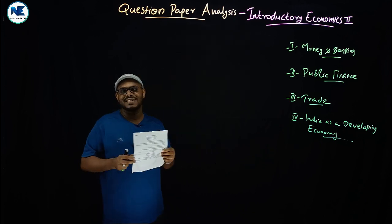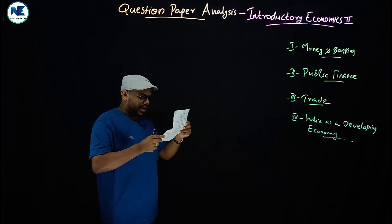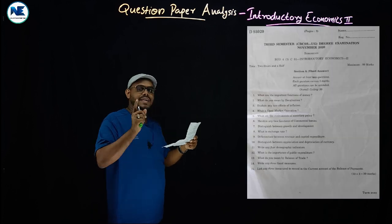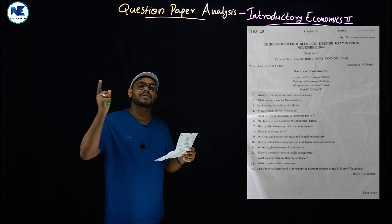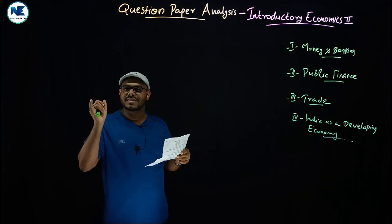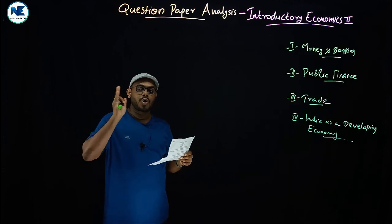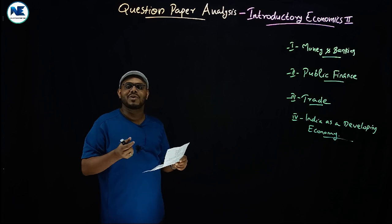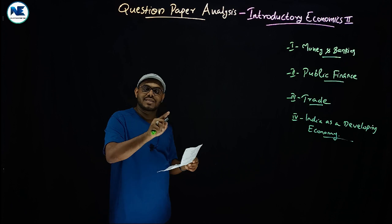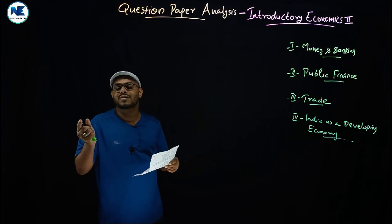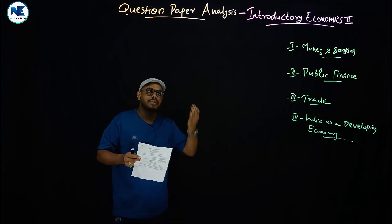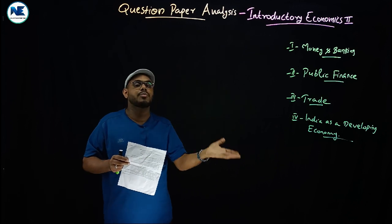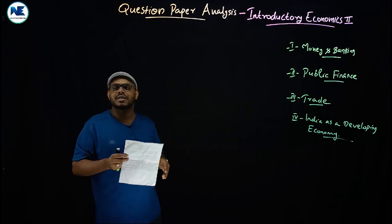The eleventh question: write any four demographic indicators — from Module 4. Demographic indicators include birth rate, death rate, growth rate of population, infant mortality rate, maternal mortality rate, density of population, fertility rate, and related concepts. Also study demographic trends, Census 2011, and demographic issues.